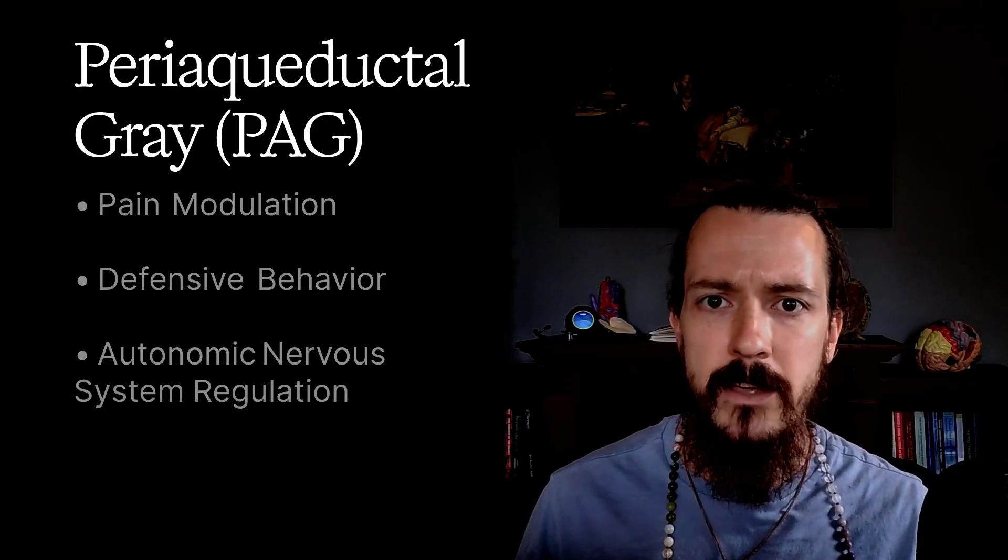As these interactions coalesce, the periaqueductal gray becomes activated. This is a midbrain structure that plays a central role in pain modulation, defensive behavior, and autonomic nervous system regulation. This system acts as a primitive integrator of survival-related behaviors, linking sensory input — especially threat and pain — with appropriate autonomic and behavioral reactions. Recent research has demonstrated a link between the periaqueductal gray and the default mode network, now thought to be involved in the establishment of identity or self-concept. It further increases activity in the default mode network, pulling the individual away from the present moment and latching onto an identity.